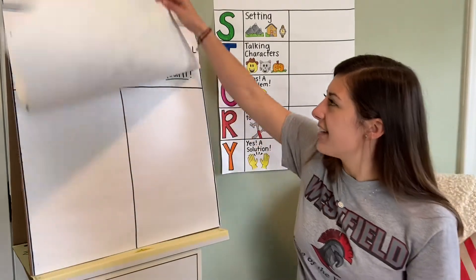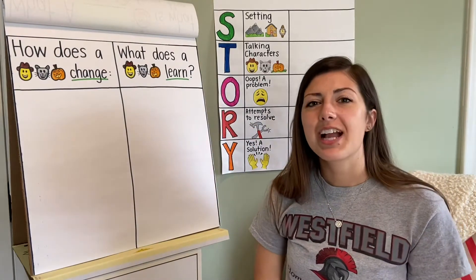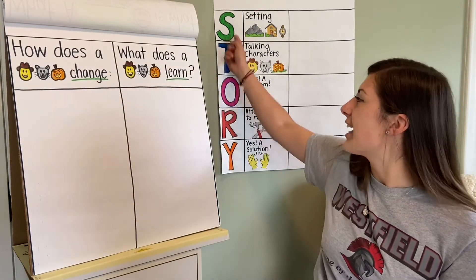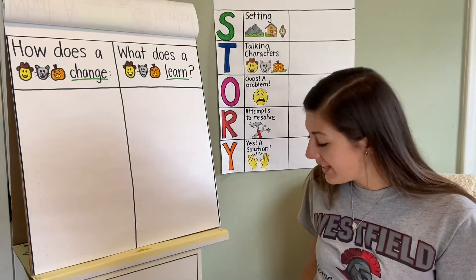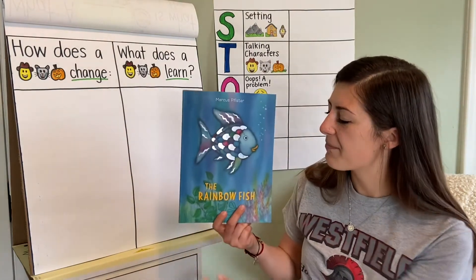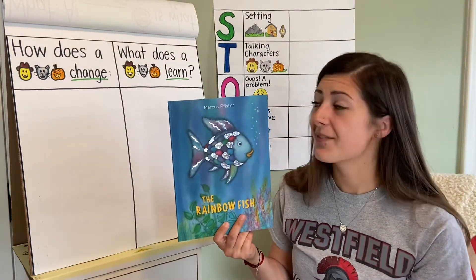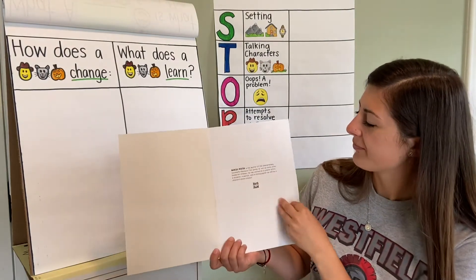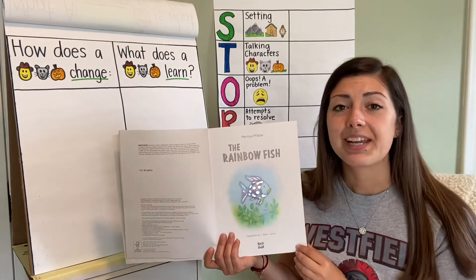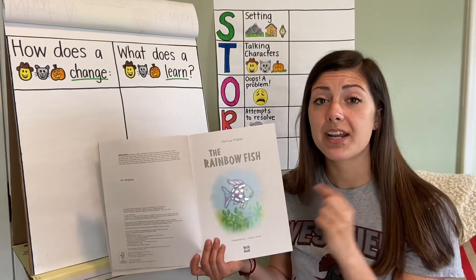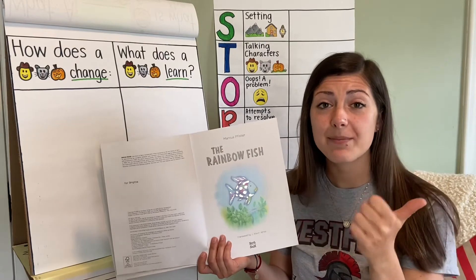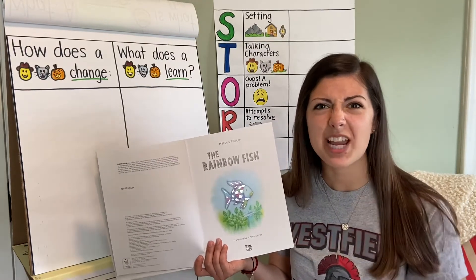As we read today, we are going to be charting our lesson. We're going to have to look at what the characters change about themselves and what they learn. We're also going to fill in our story chart as we read. Today's book is one of my favorite books — The Rainbow Fish by Marcus Pfister. We are going to work on our story elements and we are going to work on our lesson, identifying some changes and what our characters learned.